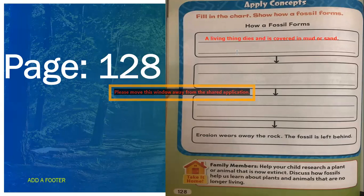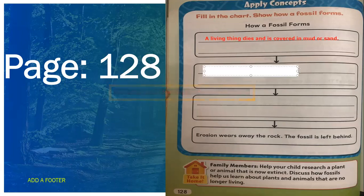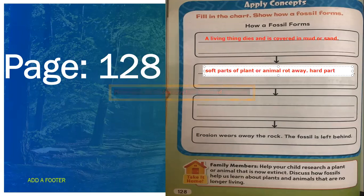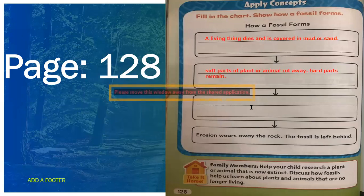Number one: a living thing dies and is covered in mud or sand. Number two, what happens? The soft parts rot away. So soft parts of the plant or animal rot away and only the hard parts remain.